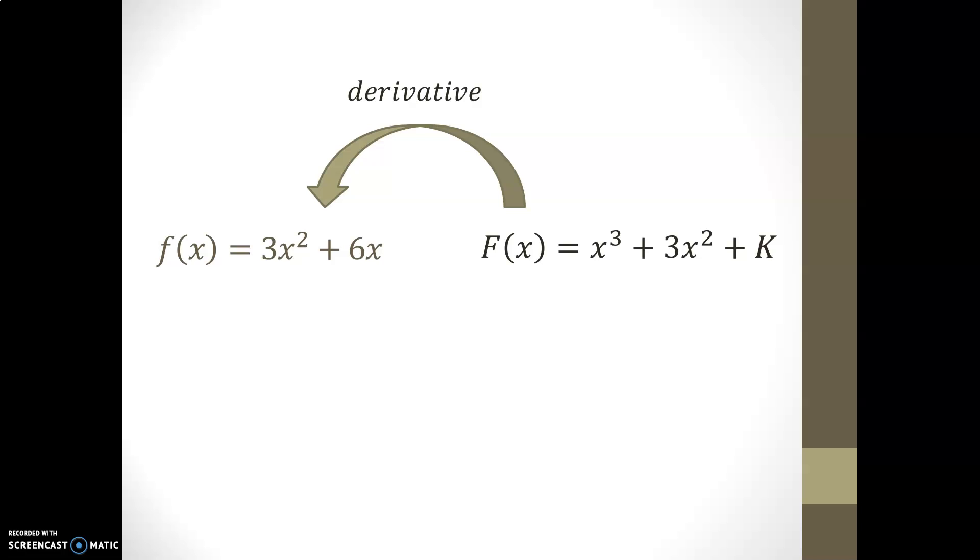So in other words, little f is the derivative of big F. In the other direction, an anti-derivative of little f produces big F.